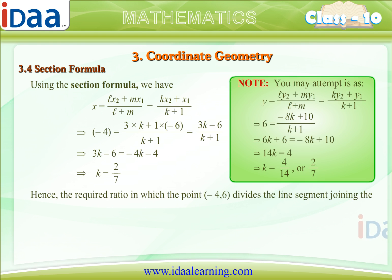Hence, the required ratio in which the point (-4,6) divides the line segment joining the points A(-6,10) and B(3,-8) is 2 by 7 is to 1 or 2 is to 7.